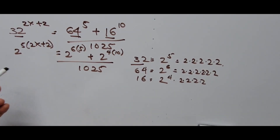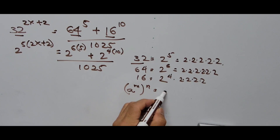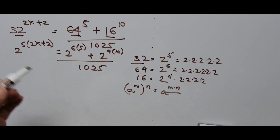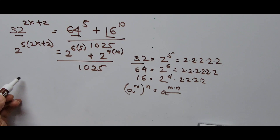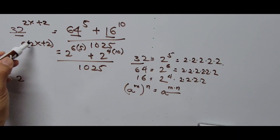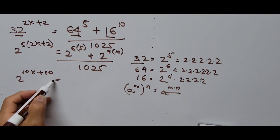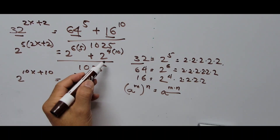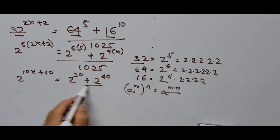Here we are applying the exponent rule: a raised to m, raised to n — that means we multiply the exponents. That will be in effect on all of these exponents. So 2 raised to 5 times the quantity in the parentheses — distributing 5: 5 times 2x is 10x, plus 5 times 2 is 10. Equals 2 raised to 6 times 5, which is 30. Plus 2 raised to the 4th power times 10, that's 2 raised to 40. Divided by 1025.